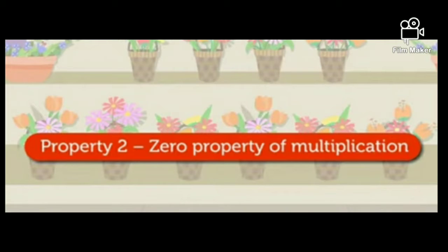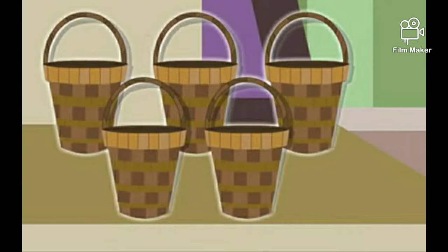We are discussing about the properties of multiplication. The first property of multiplication is the zero property of multiplication. You can see five vacant baskets on your screen.